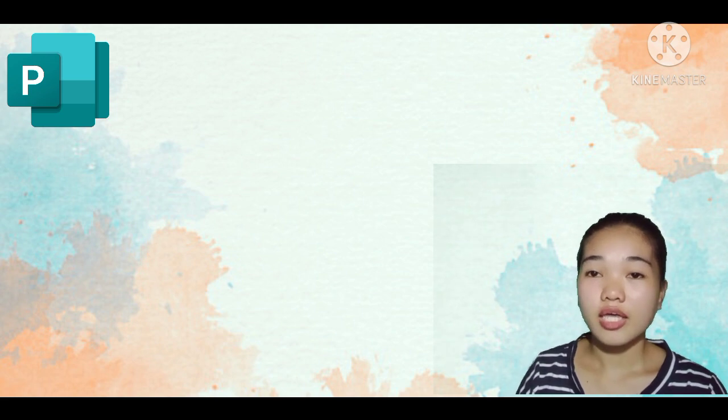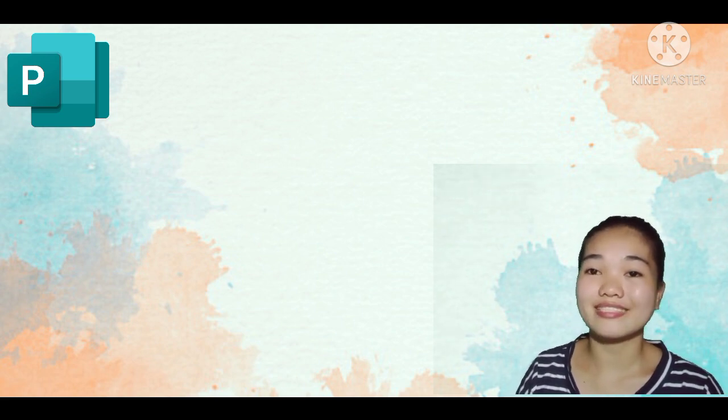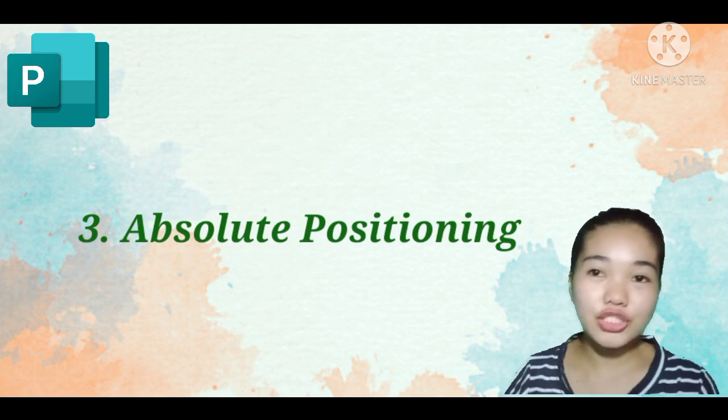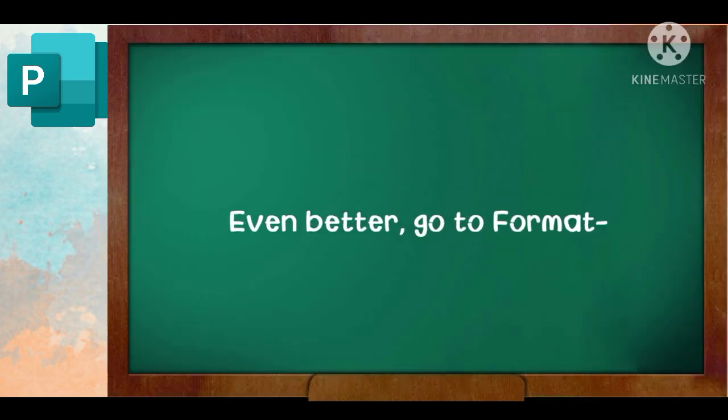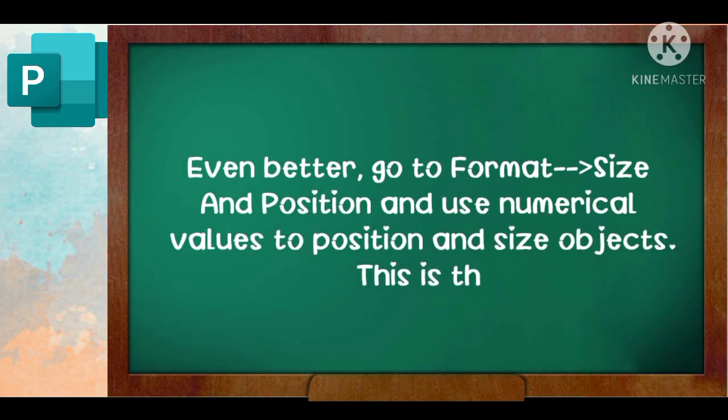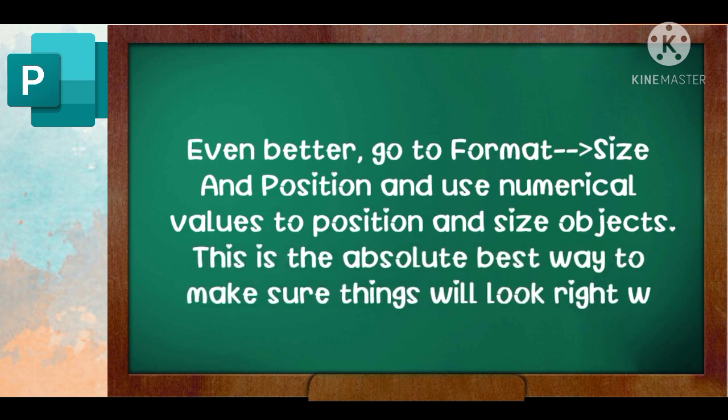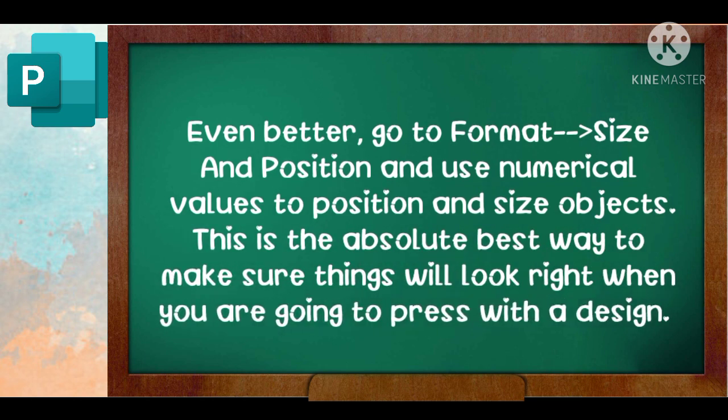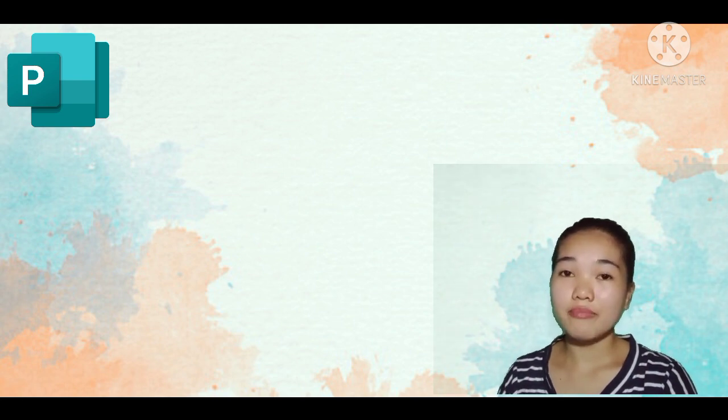Use a range nudge to change the increment of movement. Number three, absolute positioning. Even better, go to format size and position and use numerical values to position and size objects. This is the absolute best way to make sure things look right when you're going to press with a design. Do the math and use this method when you want your design elements to be positioned exactly.